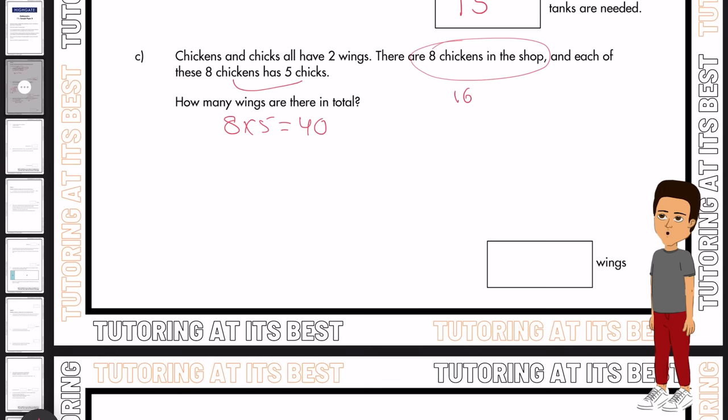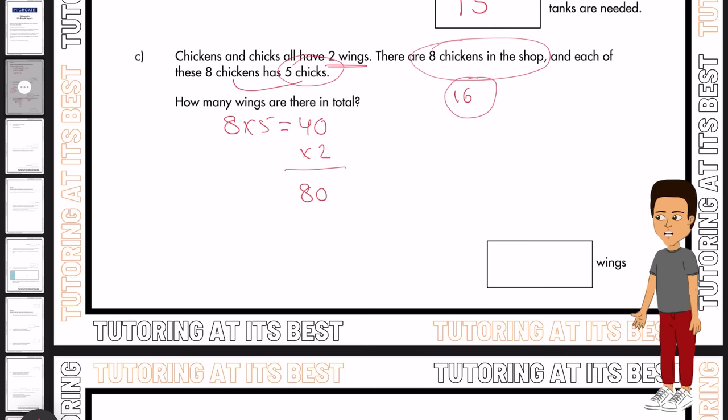And then again, if they have two wings each, times it by two, and that's 80. So now we have the five chicks, which are 80, and the eight chickens, which have 16 wings. Add that together and that's 96 wings in total.